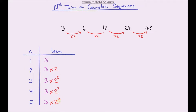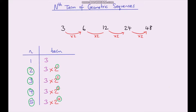If you look at the index and the term number, notice how the index is one less than the term number. This holds for each row. For the term 3 times 2, we can write 2 as 2 to the power 1 — again one less than the term number 2. And for the first term, we can rewrite 3 as 3 times 2 to the power 0, because 2 to the power 0 is just 1, and 3 times 1 equals 3. So again, the index is one less than the term number.